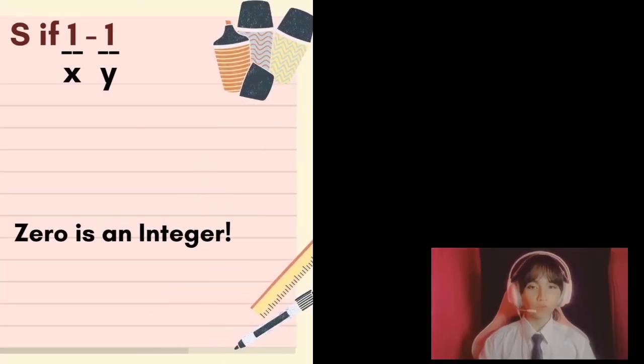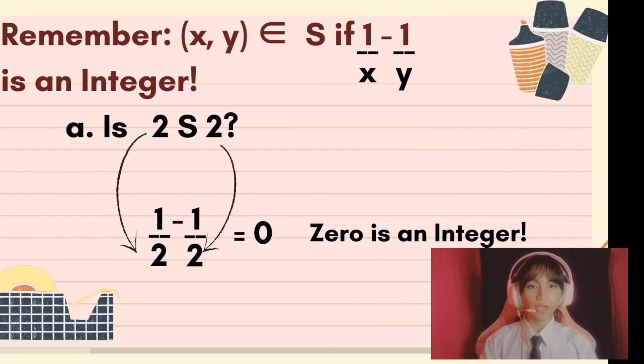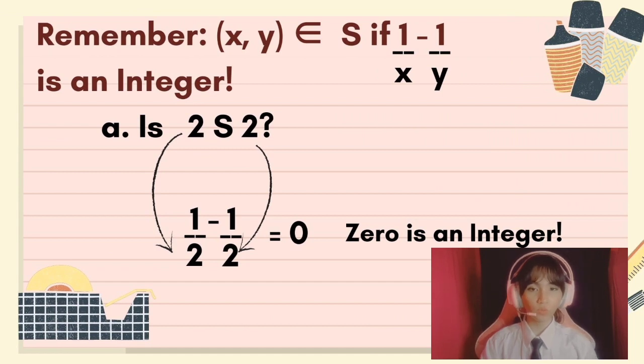Now, for the first question, to know if the two values 2 and 2 are an element of relation S, the formula for it is 1 over X minus 1 over Y. So for the X, we substitute it with the number 2, and for the Y, 2 also. So 1 half minus 1 half equals 0, and 0 is an integer.